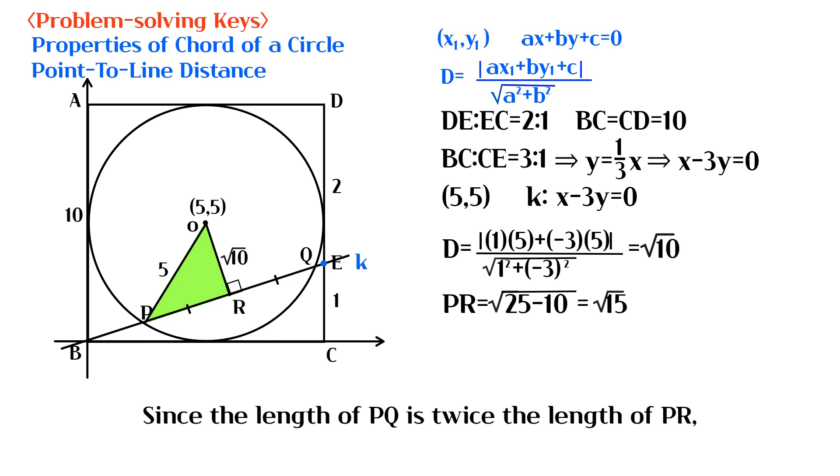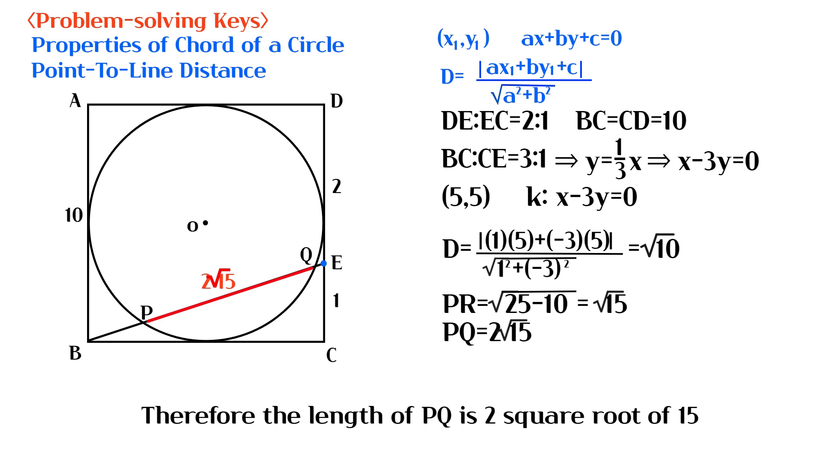Since the length of PQ is twice the length of PR, the length of PQ is 2 square root of 15. Therefore the length of PQ is 2 square root of 15.